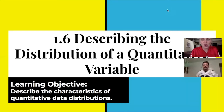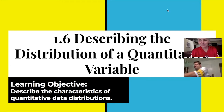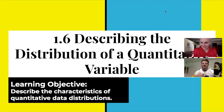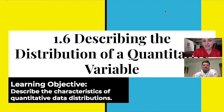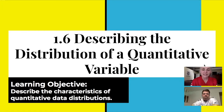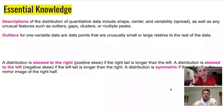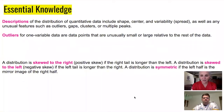Today we're talking about section 1.6: describing the distribution of quantitative variables. How does the data fall? What's important? What do we need to know? So a little bit of straight-up learning here from us.